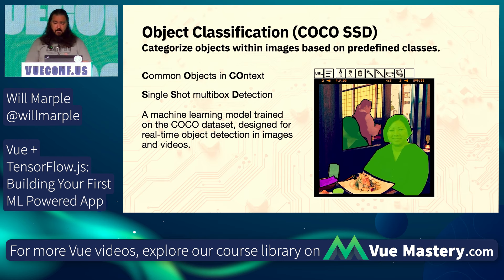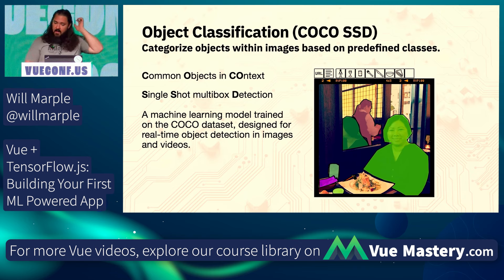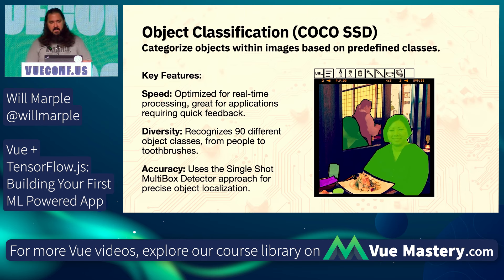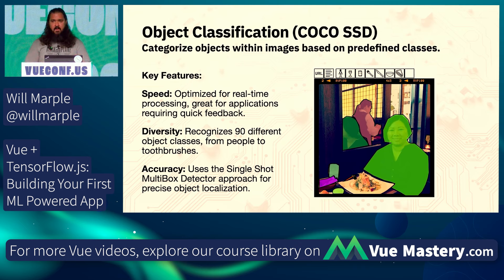Let's go over the packages and models we're going to be using. The first one is object classification using the Coco SSD model. Coco describes the dataset that was used — Common Objects in Context. SSD is the type of algorithm that does the detection: Single Shot Multi-box Detection. Key features: speed, diversity, and accuracy. It's optimized for real-time processing of images and video, covers a very broad range of different object class types, and the detection algorithm is pretty accurate.